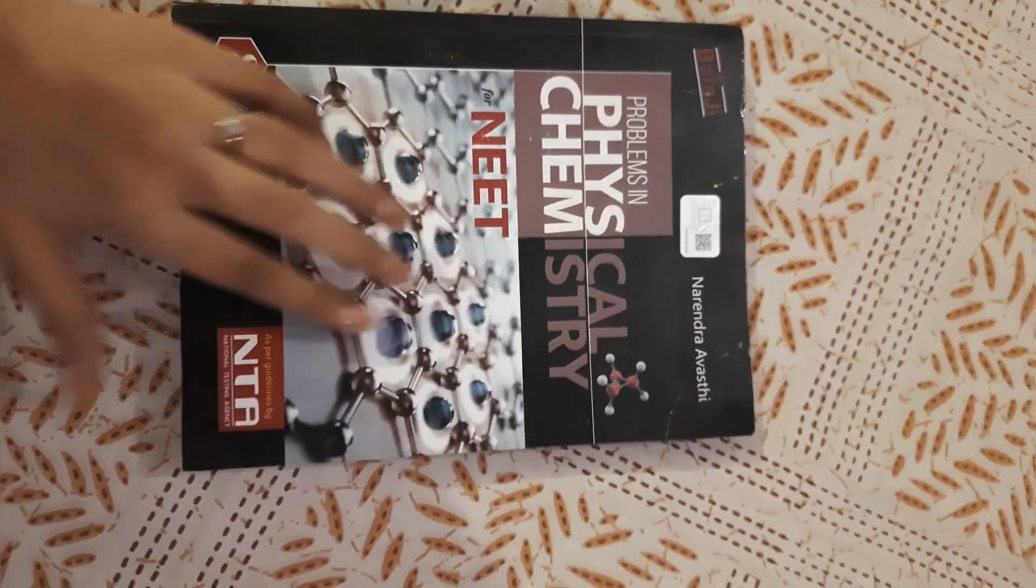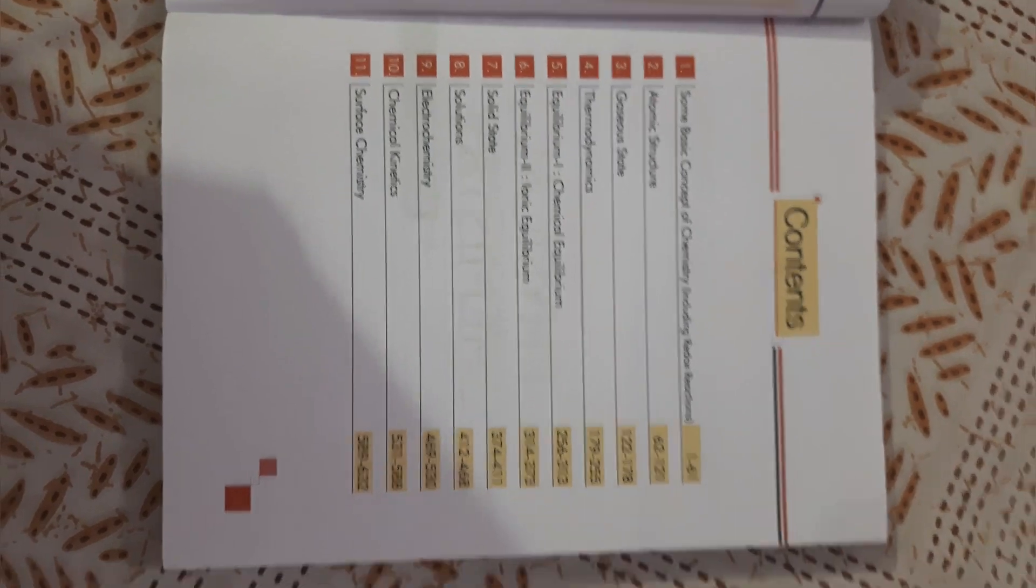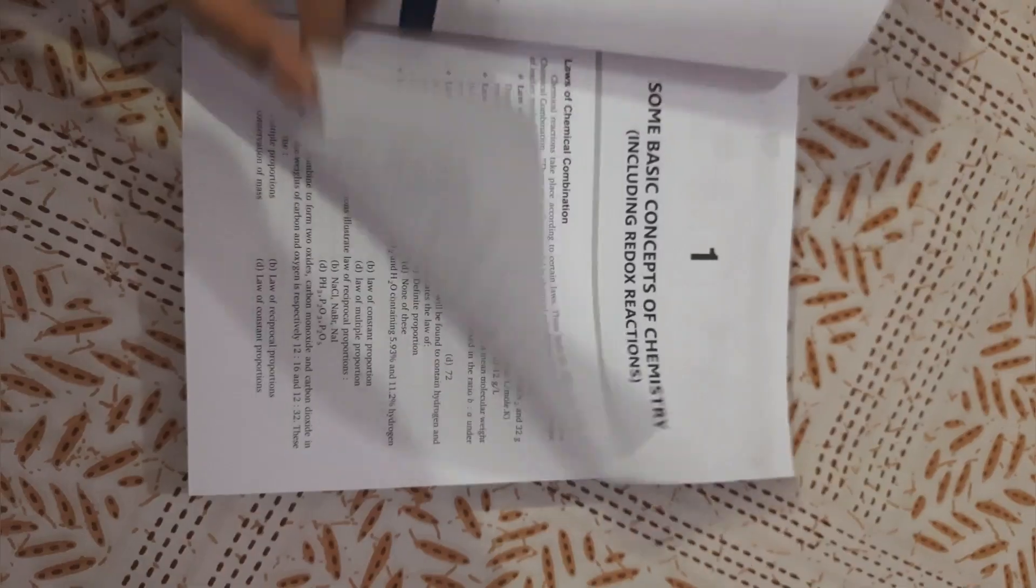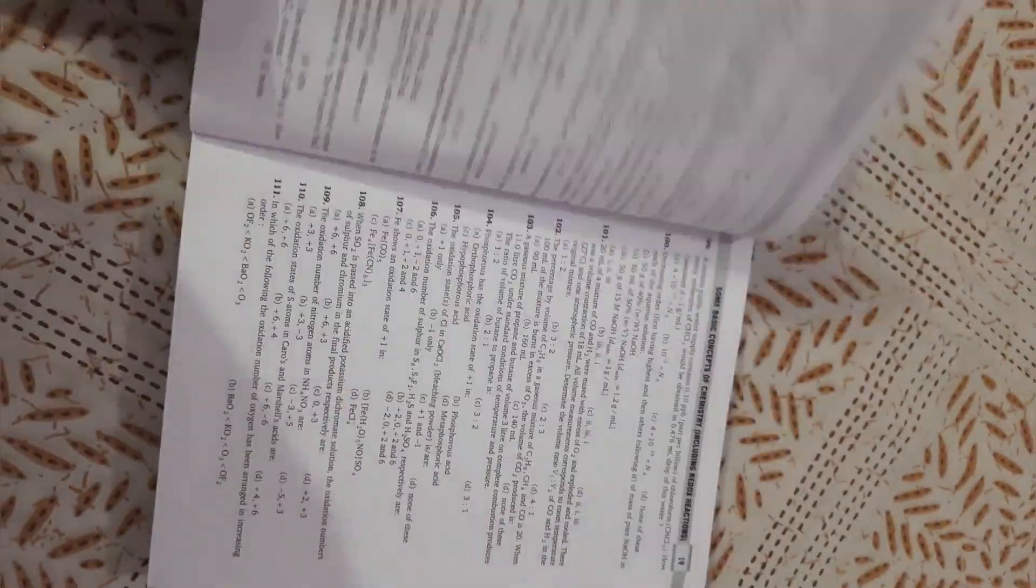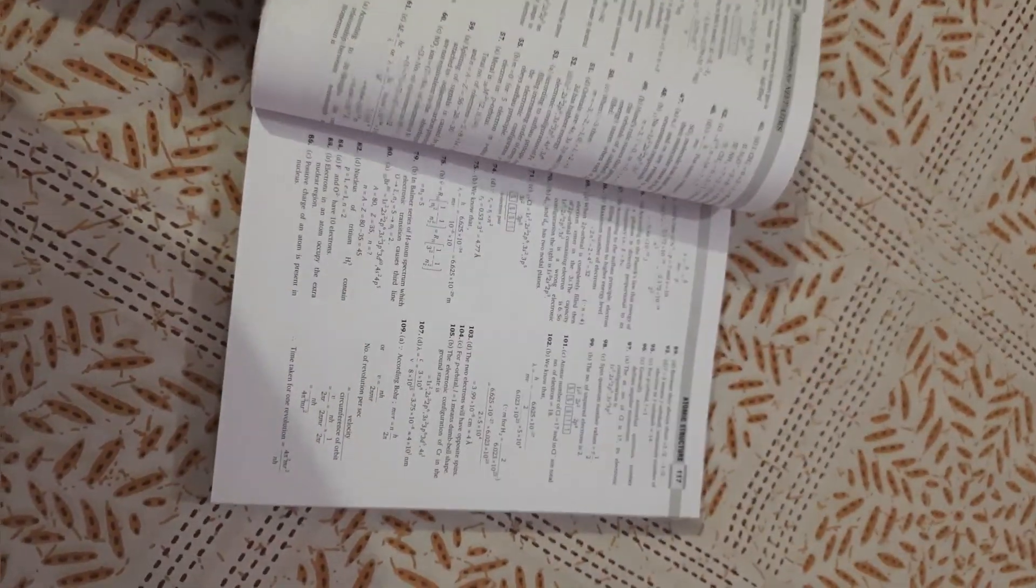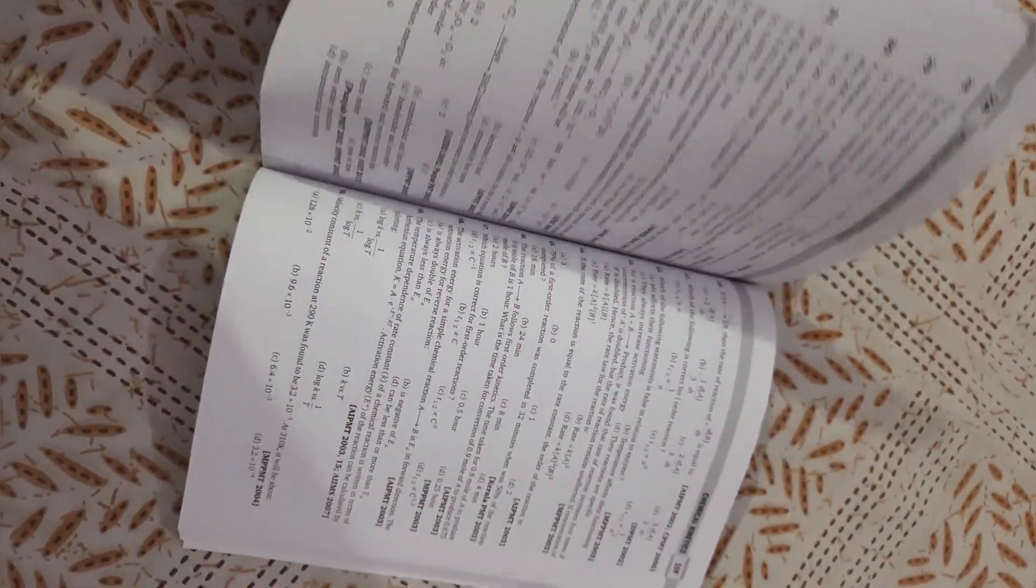The next book is MS Chouhan, and this is a very famous book for physical chemistry. I bought this in 11th because I didn't like physical chemistry and my physical chemistry wasn't strong. Out of excitement, I ordered this after seeing it on YouTube. But when I started doing it, my confidence went down further because it has hard-level questions and I couldn't solve anything. I remember feeling so bad. And this book doesn't have topic-wise questions. I started with the first chapter, chemical equilibrium, but my basics weren't strong, so I couldn't do the questions.